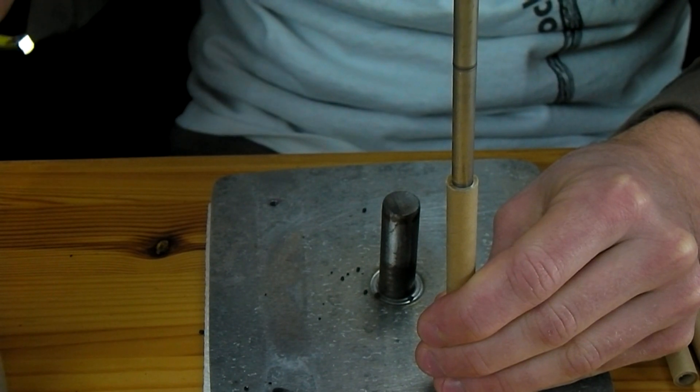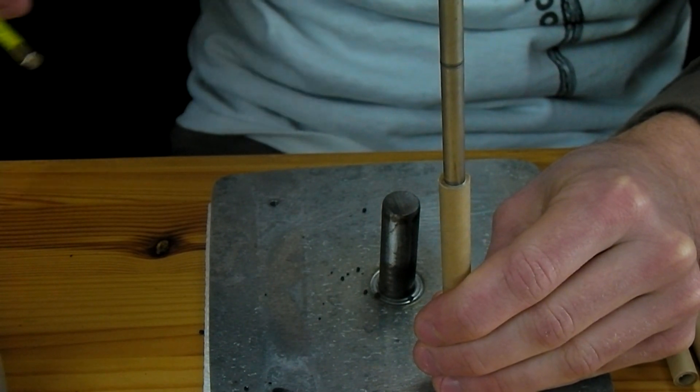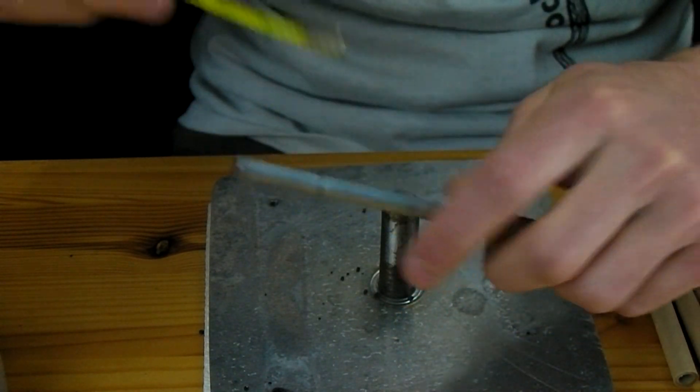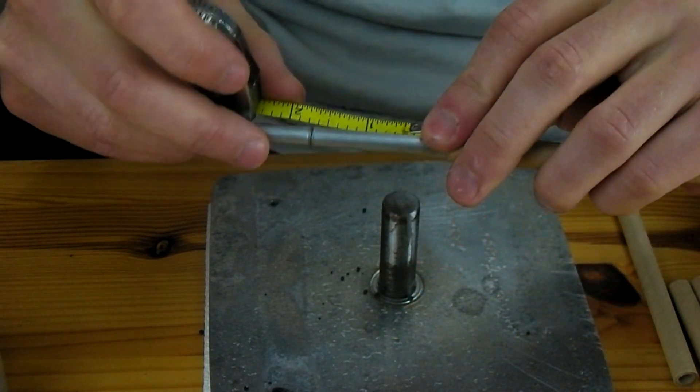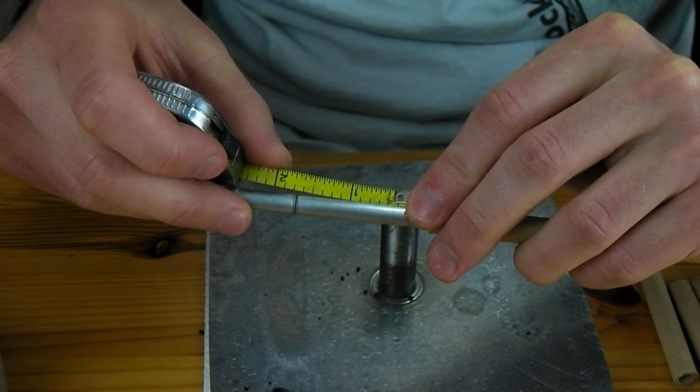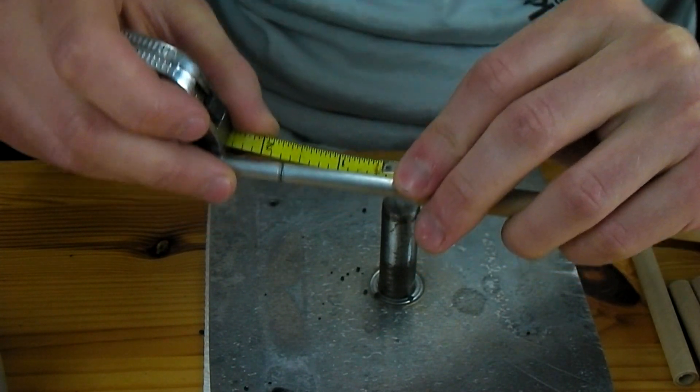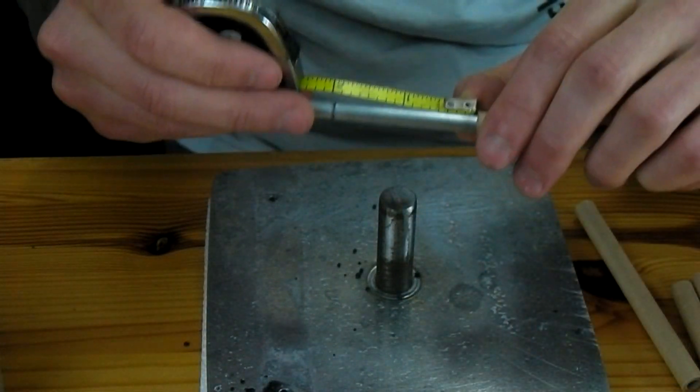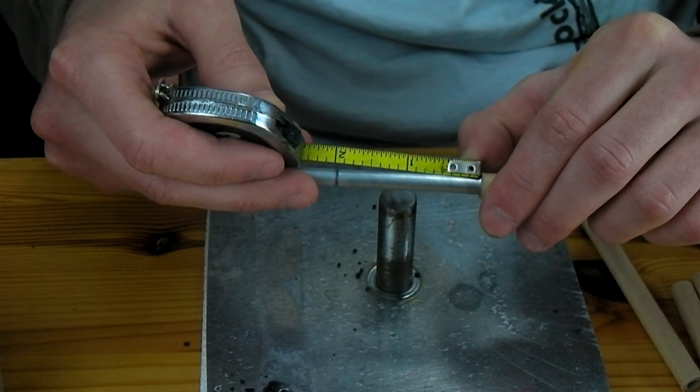All right when it starts to look close to the two inch mark what I'm going to do is just give it a measure and see where I'm at. Right now I'm just a hair below two inches so what I'm going to do is maybe add one, one and a half more increments to this and then I'll stop here. All right that puts me right about at two inches.